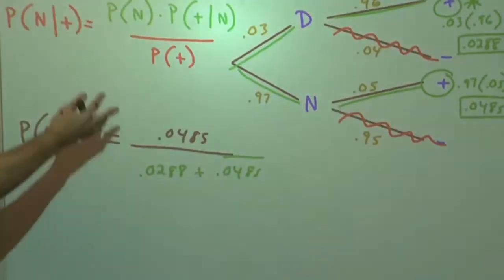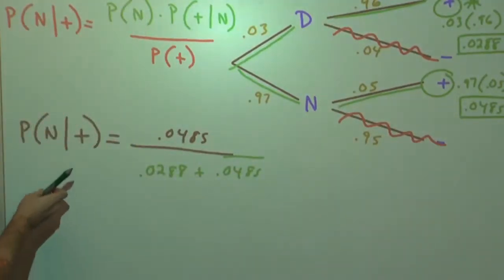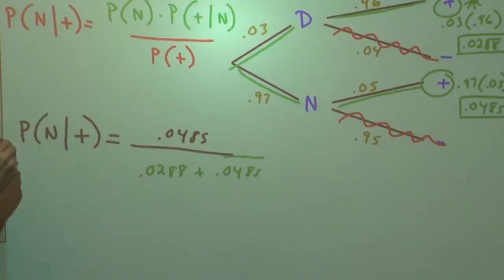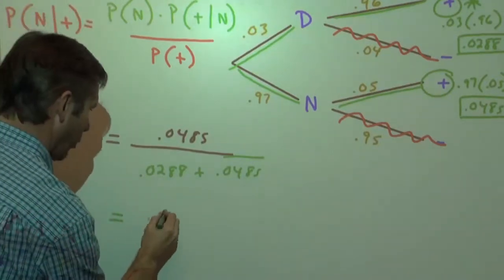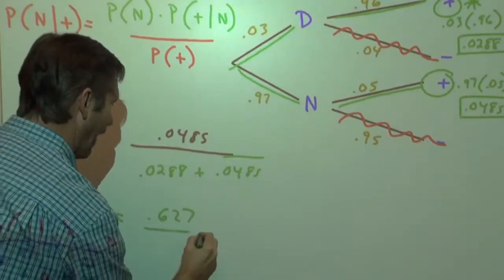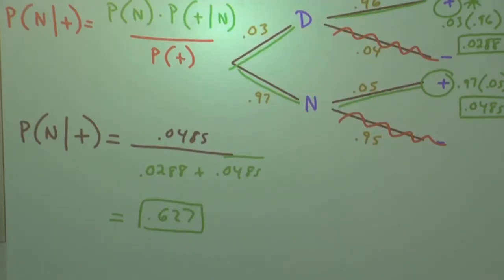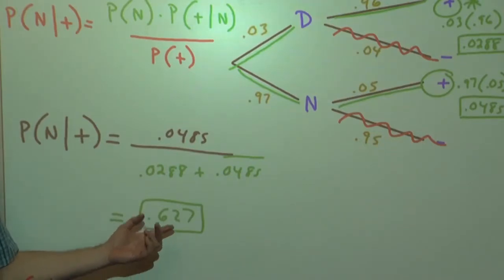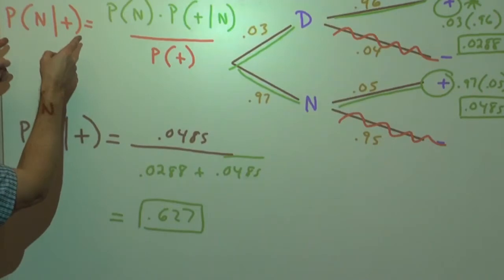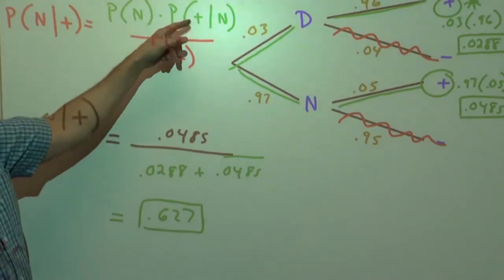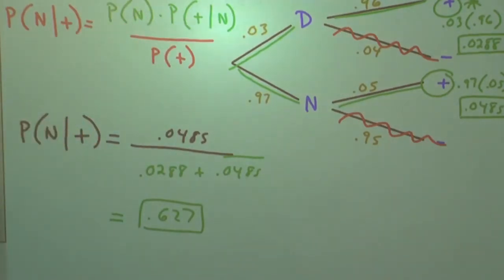Dividing these out gives approximately 0.627. So if they tested positive, the probability that they don't actually have the disease is over 50% — it's 62.7%. Those are the lovely disease problems. Once you've practiced a couple, they're really not too bad. Make a tree diagram, make sure you use the formula, and AND in this case means to multiply the probabilities together — you'll do just fine.